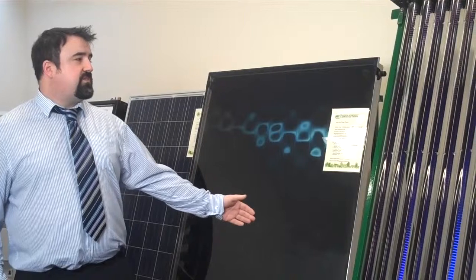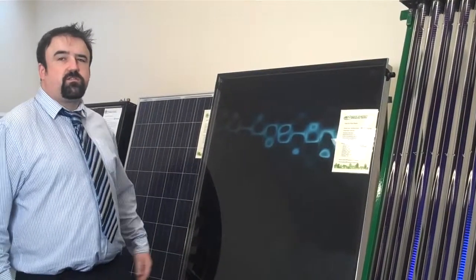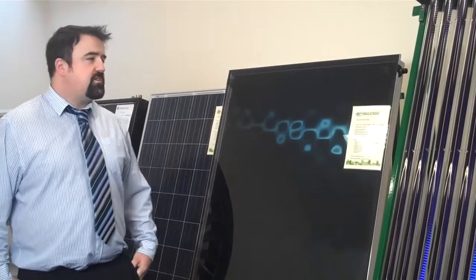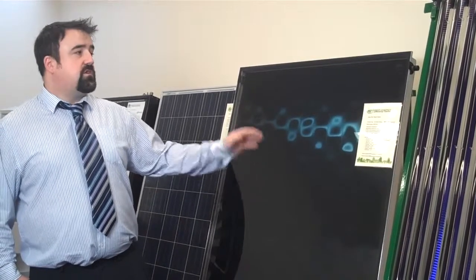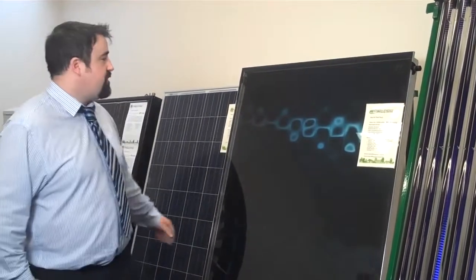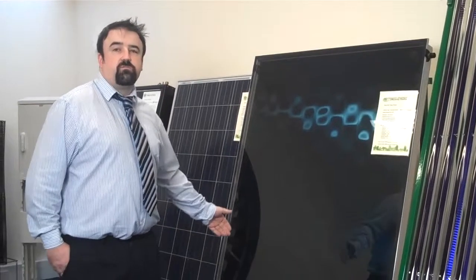The evacuated tubes are slightly more efficient than the flat plates. For every person in the house you would need 0.8 square metres coverage of evacuated tubes, whereas with a flat plate you would need 1.5 square metres.